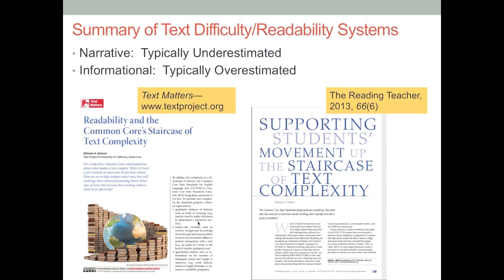But I'm really going to ask about both the veracity of doing that — can you give a number to an entire text, and what does that number mean? We need to keep remembering, and this is something we even talked about as far back as Becoming a Nation of Readers in the mid-1980s, that in narrative text, difficulty systems typically underestimate difficulty. And in informational text, they typically overestimate. These articles would be good sources for you to start with.